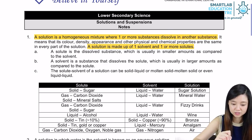So what are solvent and solute? A solute is the dissolved substance, which is usually in smaller amounts compared to the solvent, while the solvent is the substance that dissolves the solute, which is usually in larger amounts compared to the solute. The solute and solvent of a solution can either be a solid, liquid, molten solid, or even liquid-liquid.